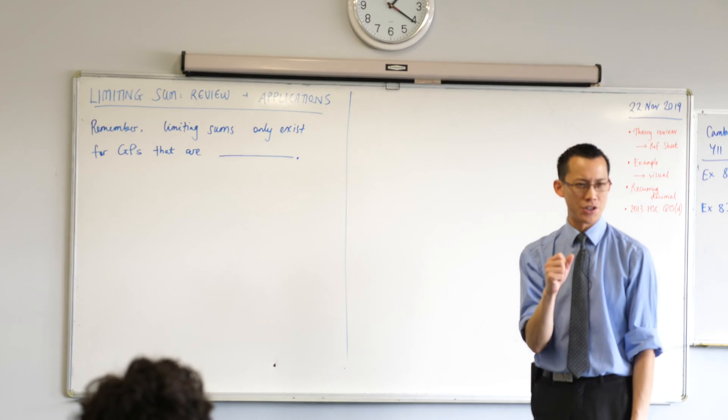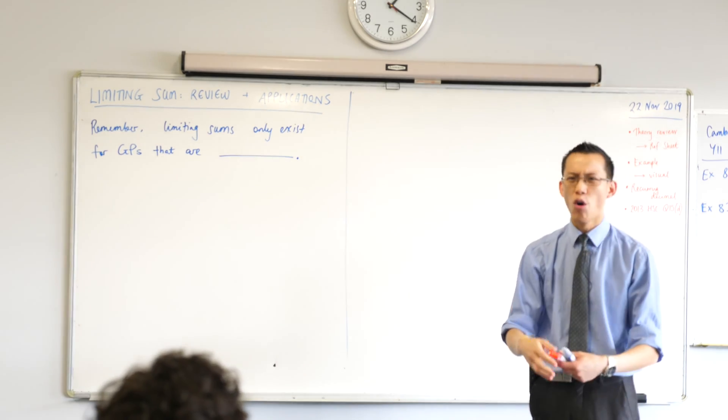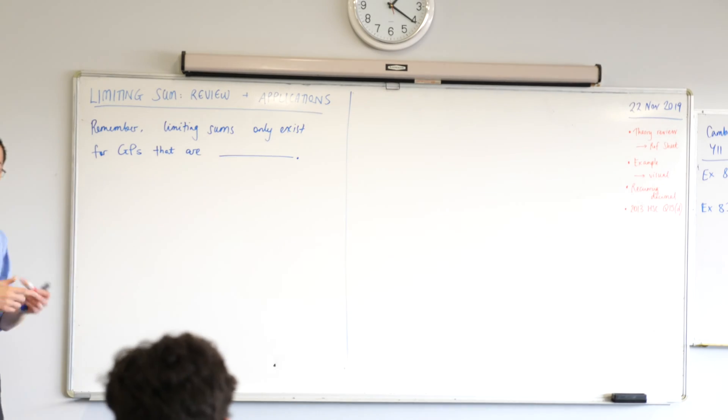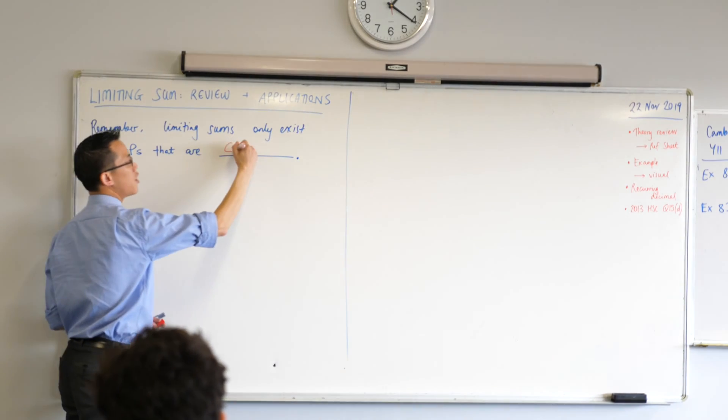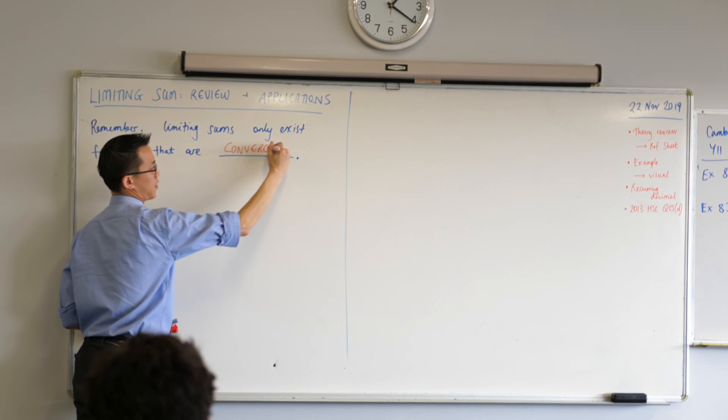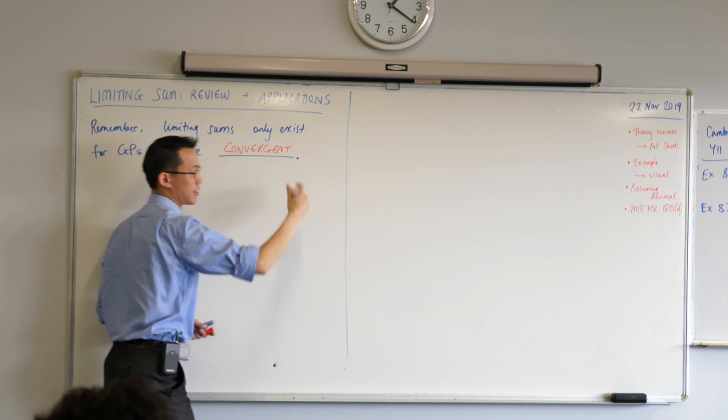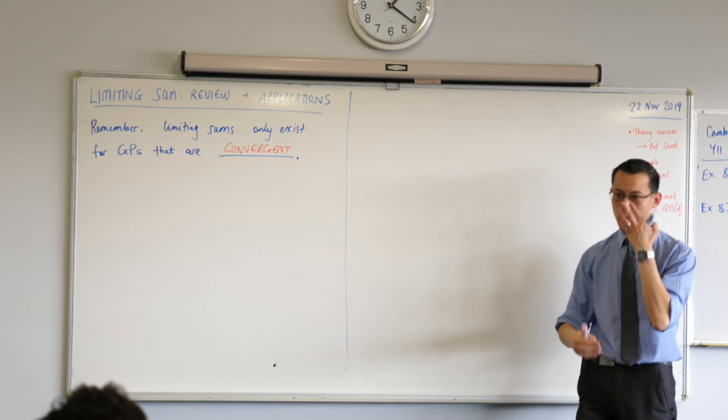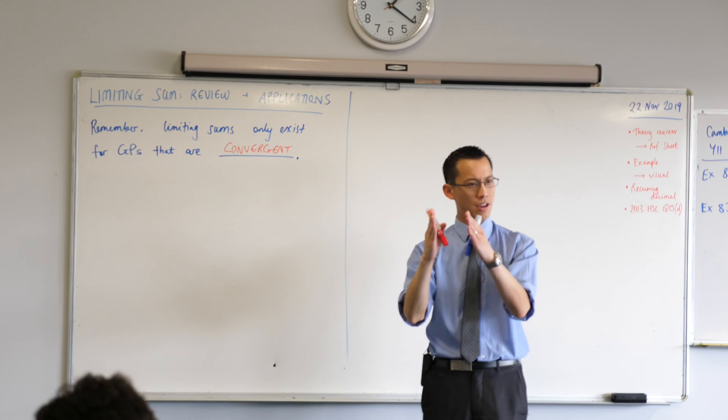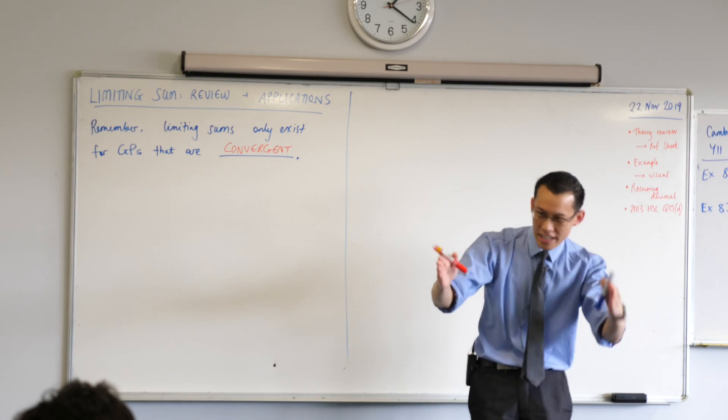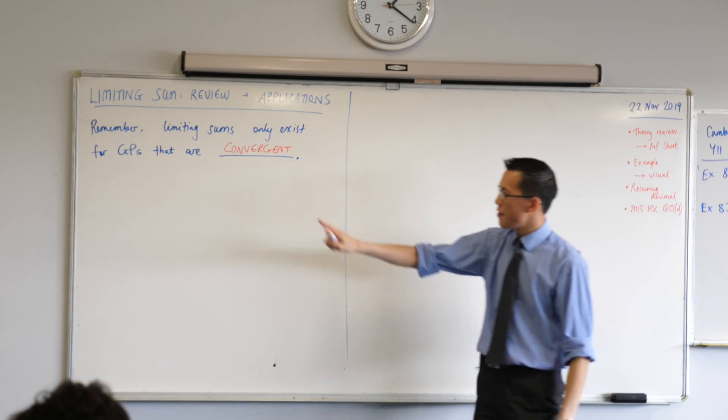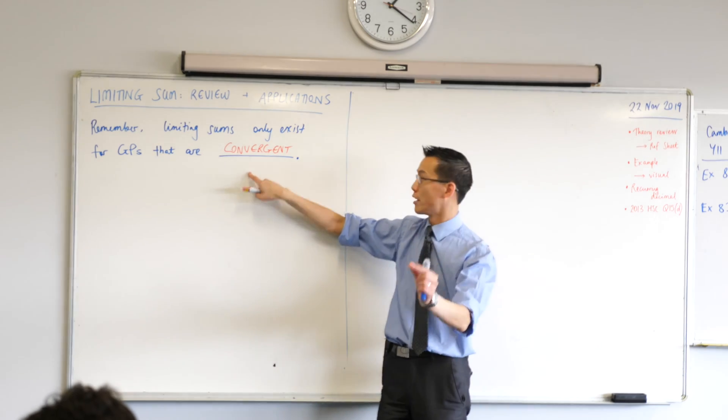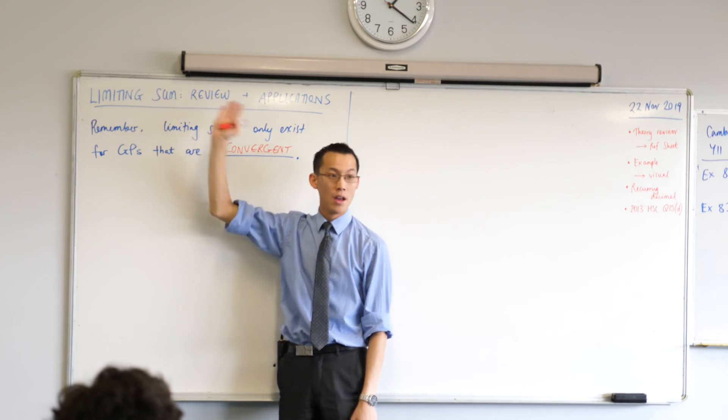What kind of geometric progressions have limiting sums? Because they don't all. The precise technical word we're looking for is convergent, as in they converge. We're looking for GPs such that when you take one partial sum, then the next one, then the next one, they are getting closer and closer to some specific value. And of course, we call that specific value the limiting sum.